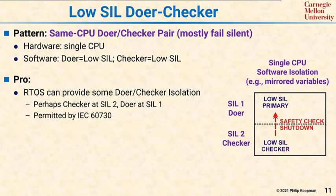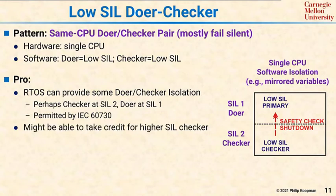The pro for this pattern is that if you have a safety-critical RTOS, you might have enough doer-checker isolation that this pattern gives you safety. Typically what you see is a checker at SIL2 and a doer at SIL1. This pattern is permitted by IEC 6730 as long as you can argue adequate isolation between the doer and the checker. The benefit is you can take credit for a higher SIL checker and a lower SIL doer and have system safety at SIL2 even though the doer is SIL1.